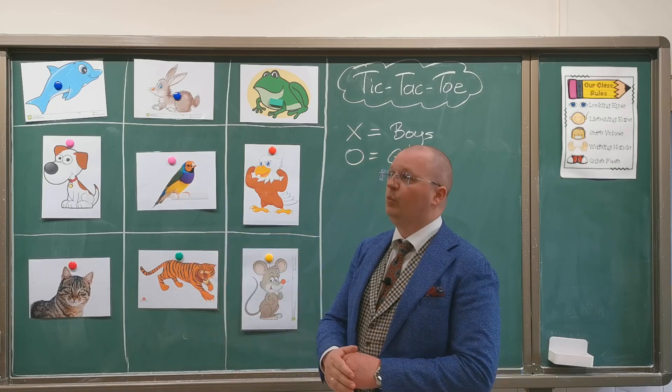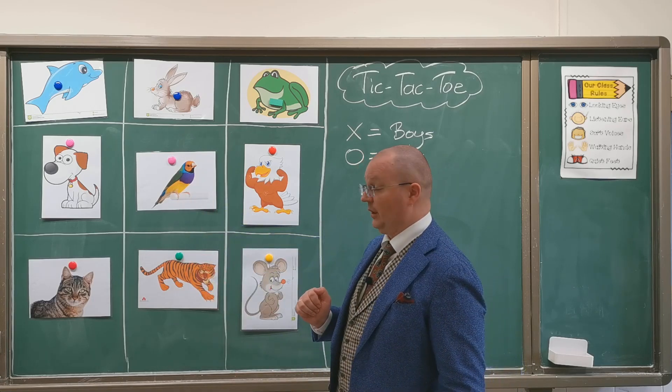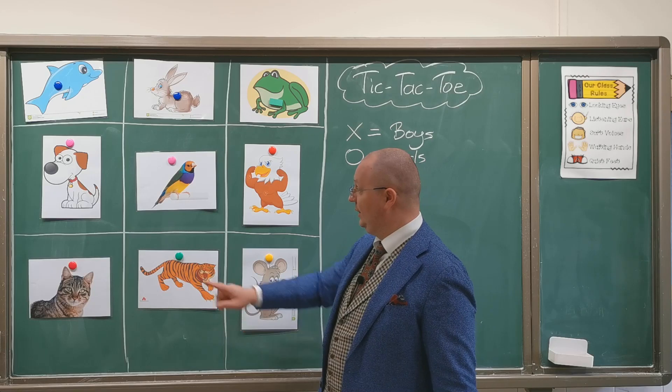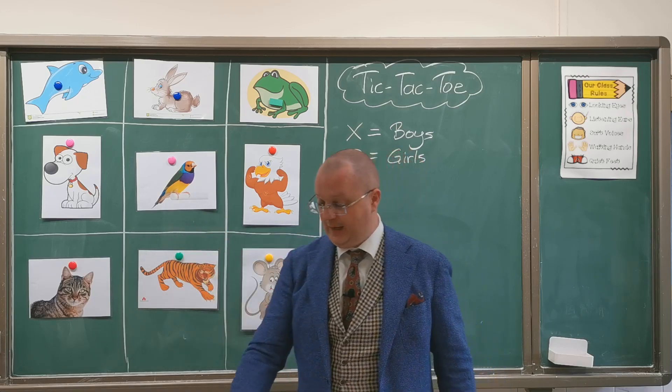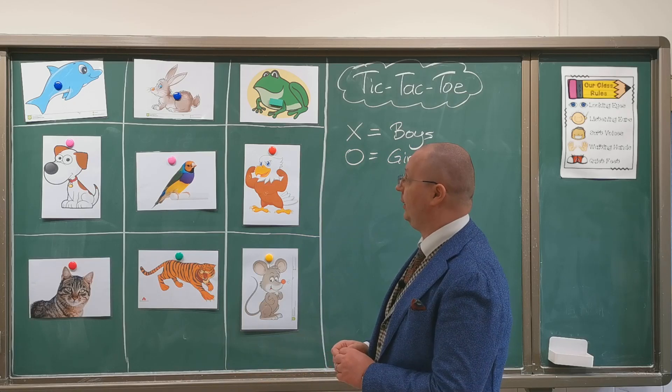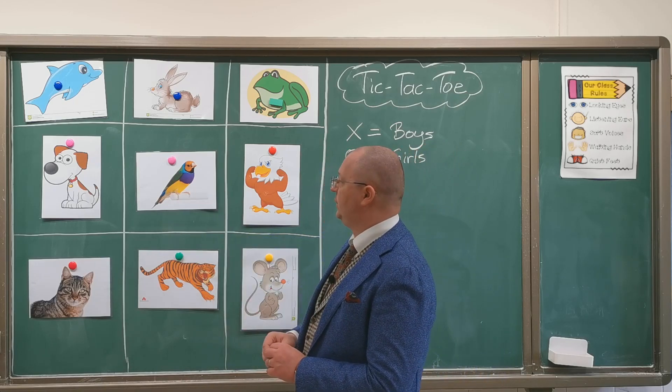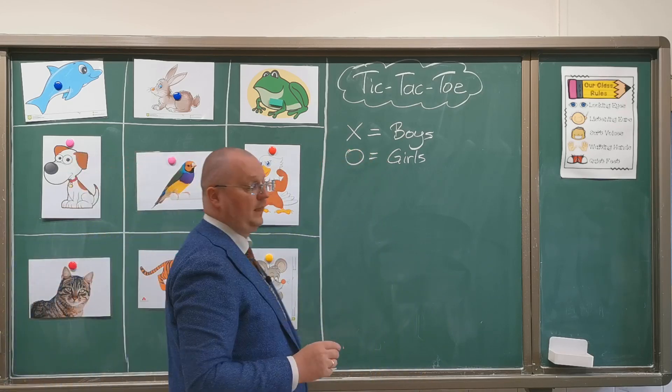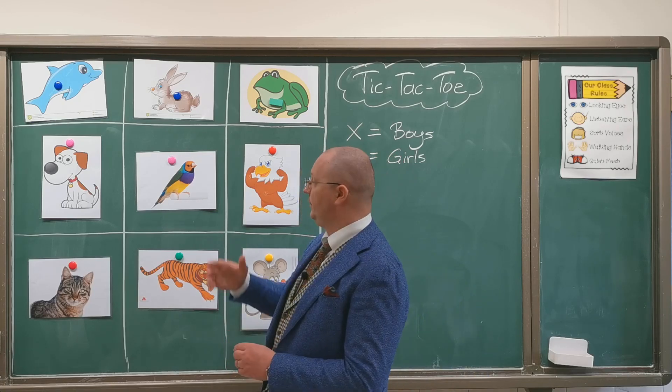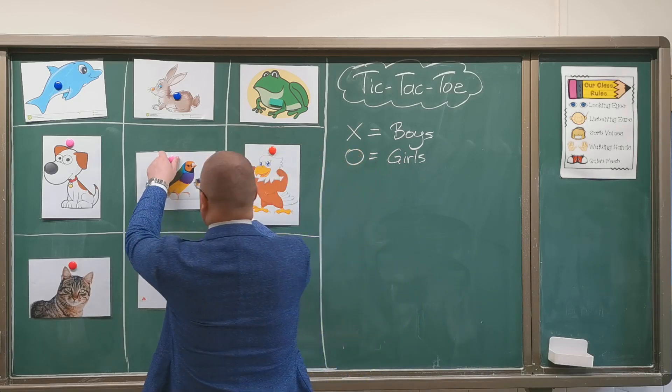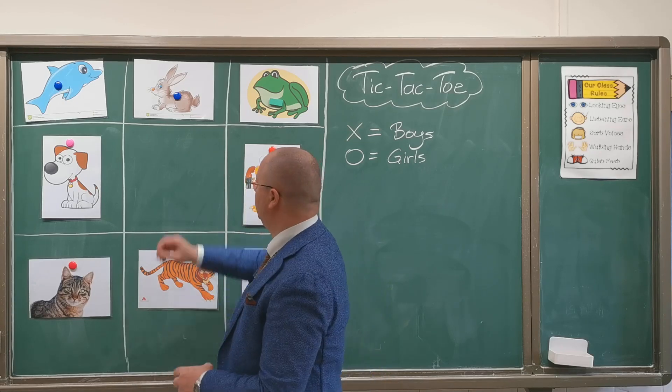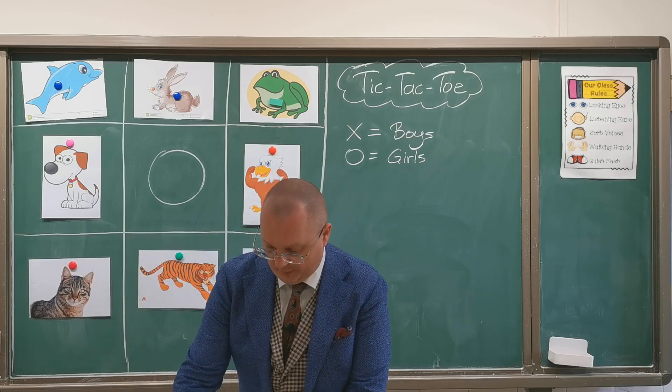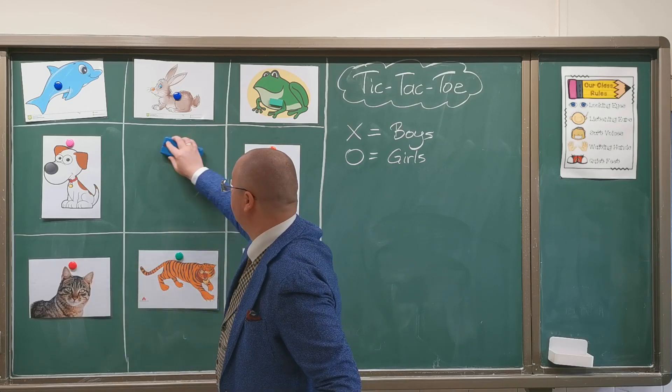If you want to make it a little bit more difficult, you can ask them that if they want to claim a square they would need to write down what this animal is. So for example, if they want to say a bird, they would need to come and write down the word here. And if they do it correctly, you can remove the flash card and then this team claims the square. So this is one way of doing it.